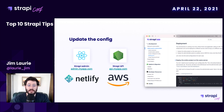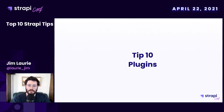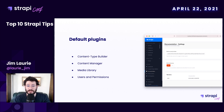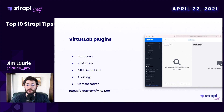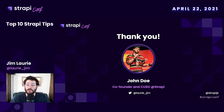Last but not least: plugins. Plugins are the system that lets you extend and empower your applications — create a new section in your admin panel, integrate custom business logic on your backend side, all managed from one admin interface. To keep it short, I'll redirect you to VirtusLab, who created multiple plugins adding features to Strapi: an audit log feature, a command system, a navigation builder for menus. And with that, we've covered 10 tips and key concepts of Strapi. Thanks for listening.